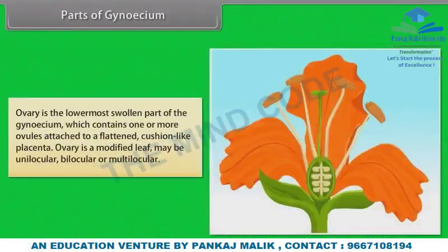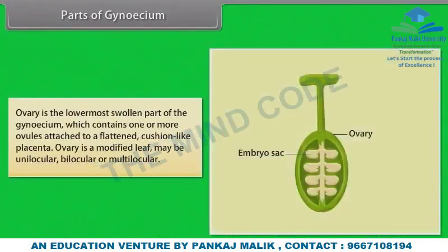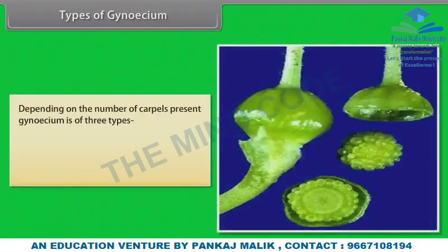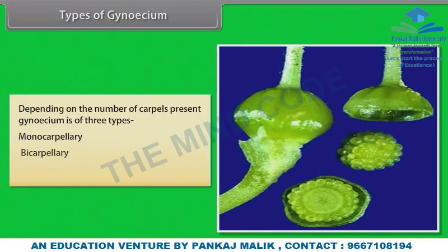The ovary is the lowermost swollen part of the gynosium which contains one or more ovules attached to a flattened cushion-like placenta. Ovary is a modified leaf and may be unilocular, bilocular or multilocular. Depending on the number of carpels present, gynosium is of three types: Monocarpellary, Bicarpellary, and Polycarpellary.